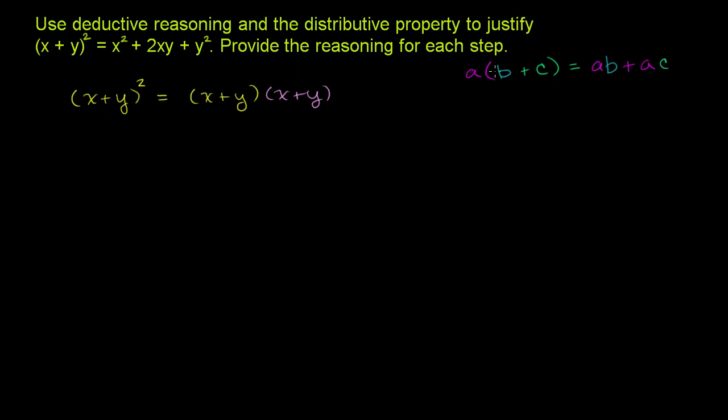It's called the distributive property because you're distributing the a in all of the terms in the expression that you're multiplying. Now, we can do the exact same thing here. Instead of an a, you can imagine this is an (x + y). And we can take this entire (x + y), and we can distribute it onto both of the terms in this expression that it is multiplying. If this was an a, it would be ax plus ay. Now that it's an (x + y), we multiply the (x + y) times each of those terms. And that's just by the distributive property.